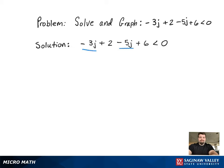The first thing we need to do in this problem is combine the like terms on the left-hand side of the equation. That will produce negative 8j plus 8 less than 0.